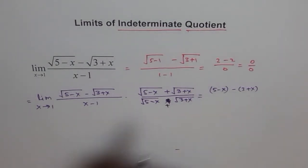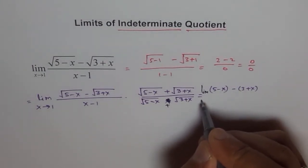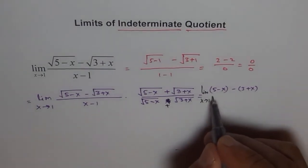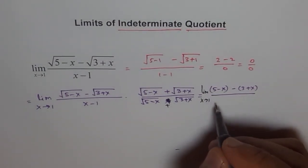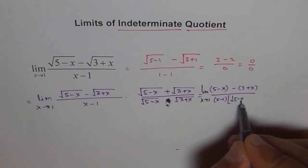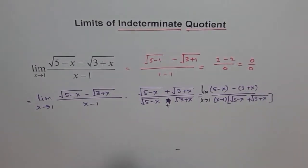I should have written limit x approaches also on the side, which I keep forgetting. Limit x approaches 1. Over x minus 1 times the whole thing, which is square root of 5 minus x plus square root of 3 plus x. So this is what we get.